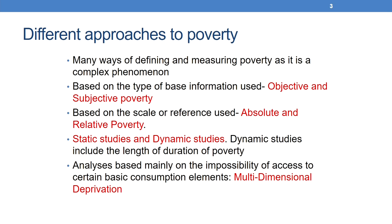Depending on the point of view adopted, different poverty analyses can be carried out. A first classification refers to the type of base information used, which can be termed objective and subjective poverty. Likewise, depending on the scale or reference used, we refer to absolute and relative poverty. Finally, it is also important to distinguish static studies from dynamic studies, which include the duration of poverty — giving a difference between transversal poverty and long-term or persistent poverty.